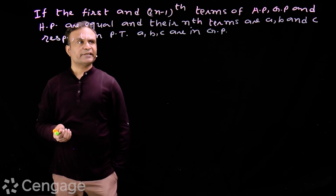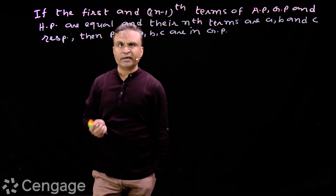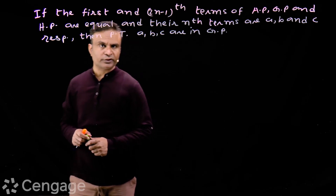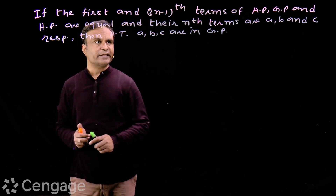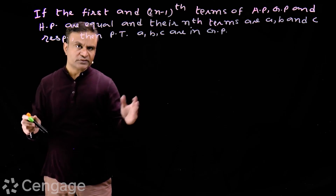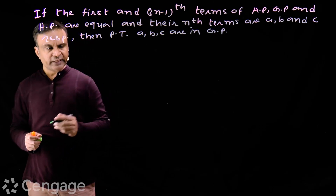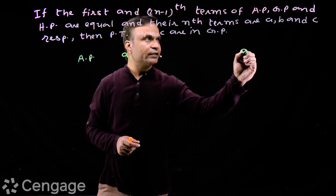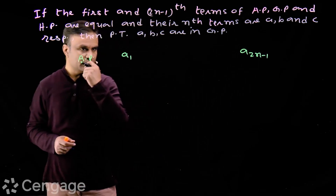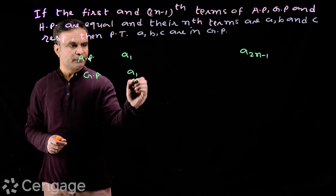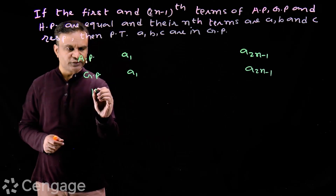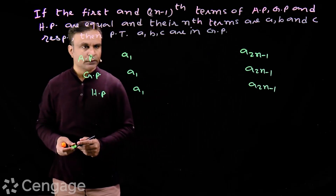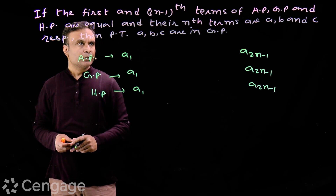Let us have one more such interesting question. If the first and (2n minus 1)th terms of an AP, GP, and HP are equal, and their nth terms are a, b, and c respectively, then prove that a, b, and c are in geometric progression. We write the three progressions.